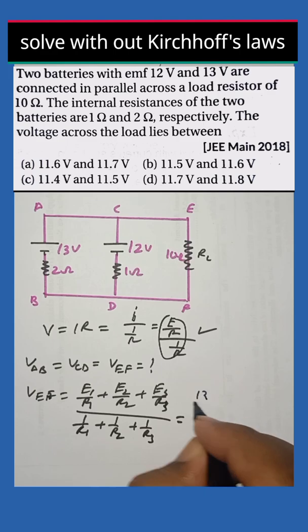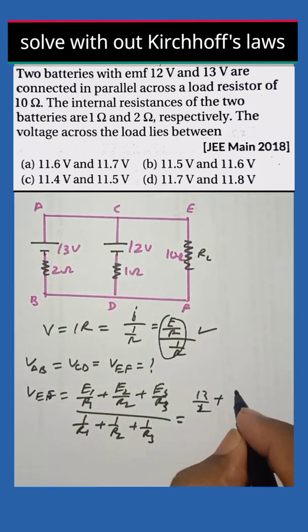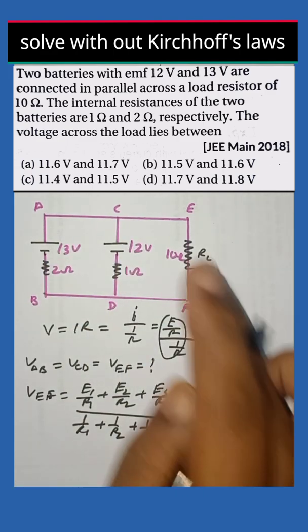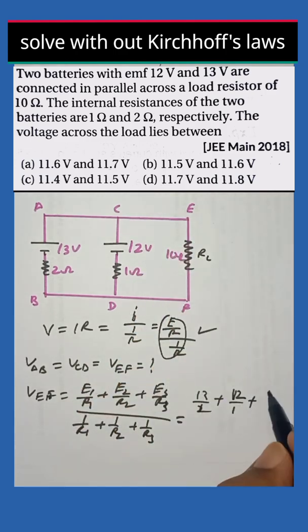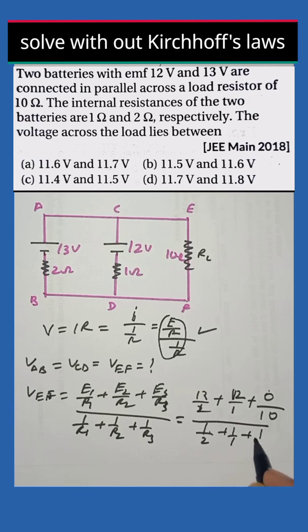So here E1 is nothing but 13 by 2, then 12 by 1, plus here no battery is connected, so we can write 0 by 10 here, whole divided by 1 by 2 plus 1 by 1 plus 1 by 10 here.